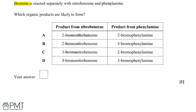In this question, bromine is reacted separately with both nitrobenzene and phenylamine. These are both examples of electrophilic substitution of the benzene ring overall. We need to predict whereabouts this substitution will occur and therefore which organic products are likely to form. Let's start by drawing out both the nitrobenzene and phenylamine so that we can predict which groups they will direct to.